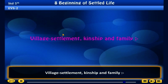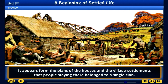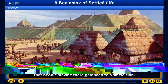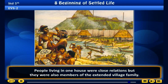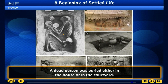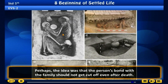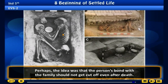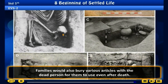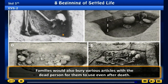Village settlement, kinship and family. It appears from the plans of the houses and the village settlements that people staying there belonged to a single clan, meaning they were all related to one another. Thus the entire village settlement was an extended family. People living in one house were close relations but also members of the extended village family. A dead person was buried either in the house or in the courtyard, perhaps so that the person born with the family should not get cut off even after death. Families would also bury various articles with the dead person for them to use after death.